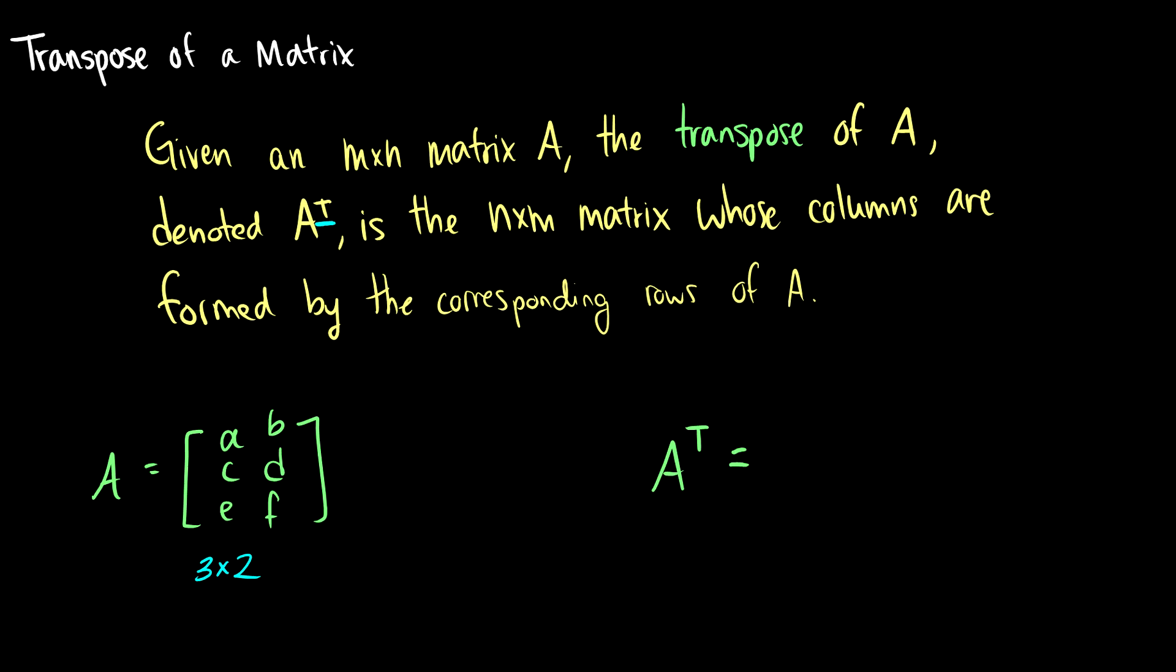So what does this mean? This means that if you have an original matrix A, its rows become the columns and the columns become the rows. So essentially they do a little flip and they kind of turn themselves sideways and flip around.